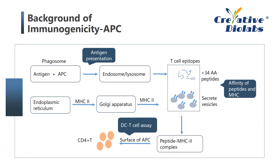Antigen processing and presentation plays a critical role in the immunogenicity of organisms. The processes are performed by professional APCs — antigen-presenting cells — such as dendritic cells (DCs), macrophages, and B-cells. There are two involved events in the process: (1) antigen capture, which delivers antigens to the cellular antigen processing machinery; and (2) antigen processing and presentation, which generates antigenic peptides bound to MHC molecules for presentation to adaptive immune cells.